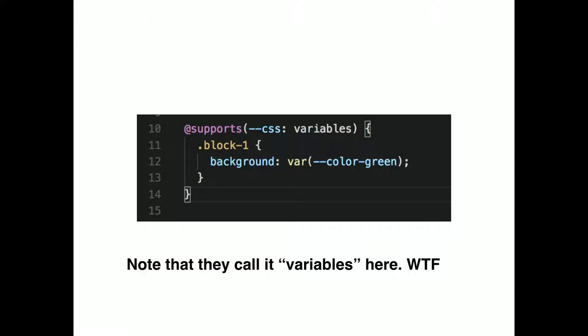You can do @supports. An @supports is kind of like a media query, but it says 'does the browser support this?' You can put @supports display: grid and it will only evaluate true if that property value is supported by the browser. You can do @supports for CSS variables, or use 'not' CSS variables in there, and set your properties that way.